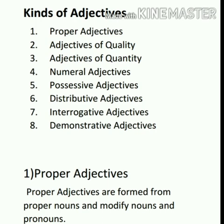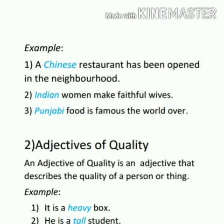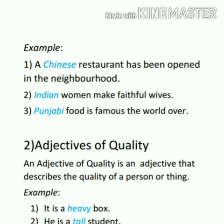Proper adjectives are formed from proper nouns. For example, we can form 'Japanese' from the word Japan, 'Indian' from the word India, and 'Chinese' from China. Most of the time they show the nationality. Examples: a Chinese restaurant has been opened in the neighborhood; Indian women make faithful wives; Punjabi food is famous all over the world. Here the highlighted words Chinese, Indian and Punjabi are proper adjectives.